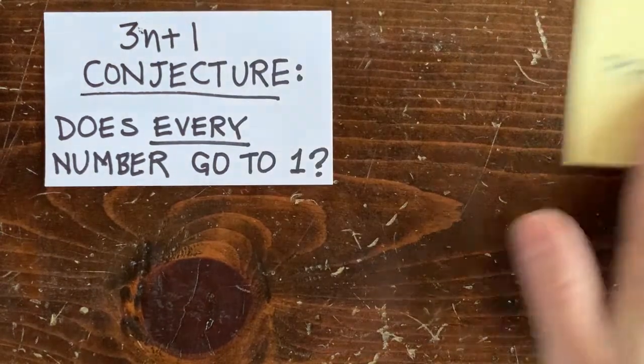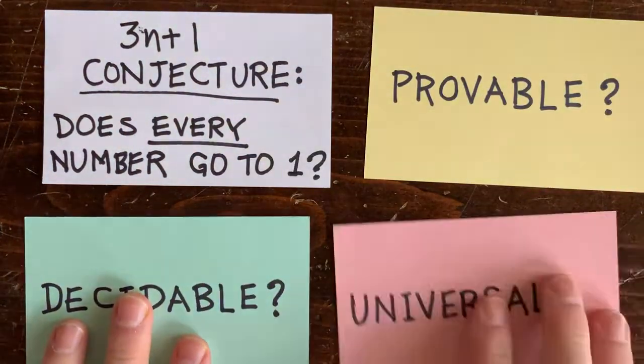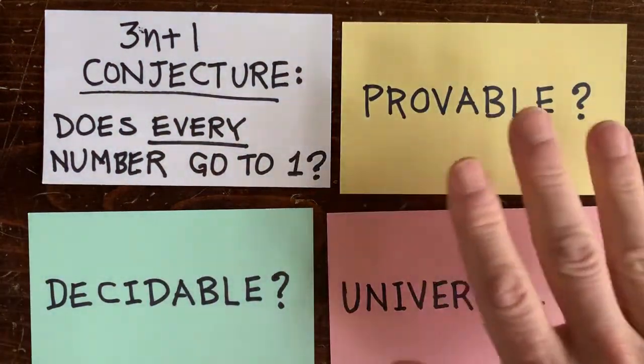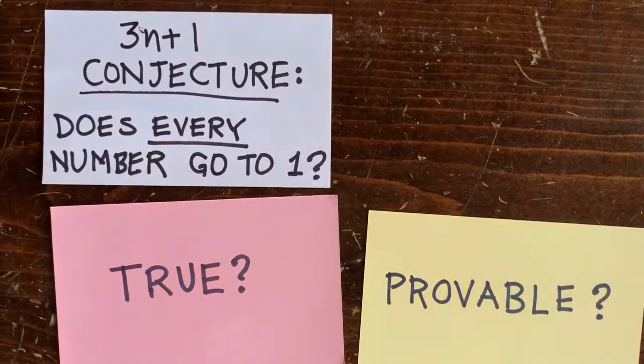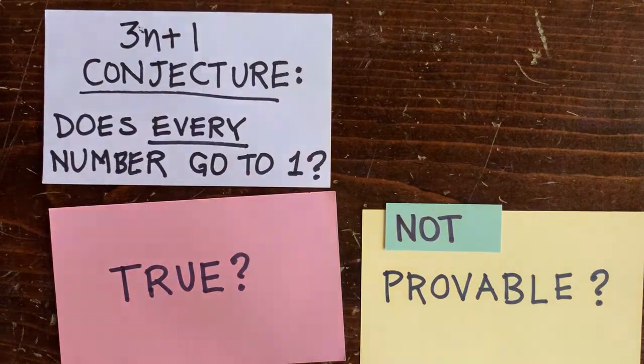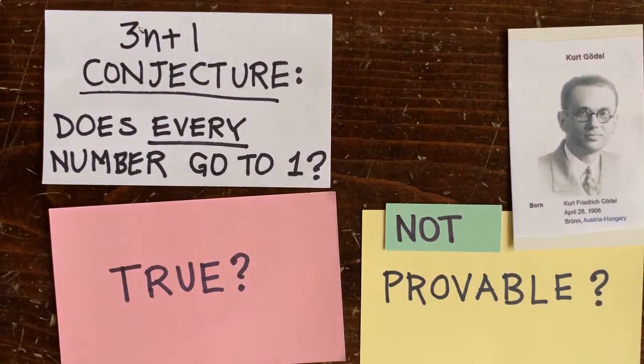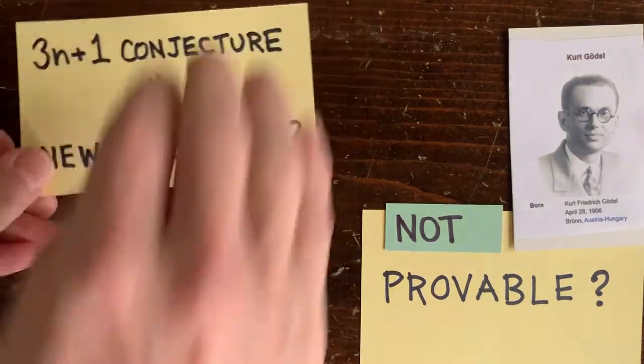We got three topics: provability, decidability, and universality. First, what if the 3N plus 1 conjecture is true but not provable? Kurt Gödel showed that there are some mathematical statements of that sort. So if the 3N plus 1 conjecture were like that we'd have to add it as a new axiom of mathematics.